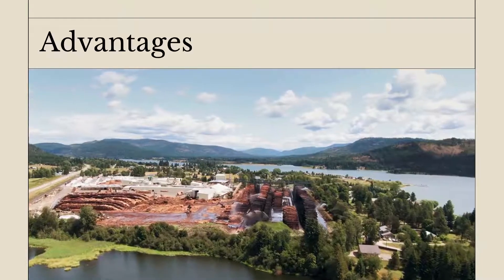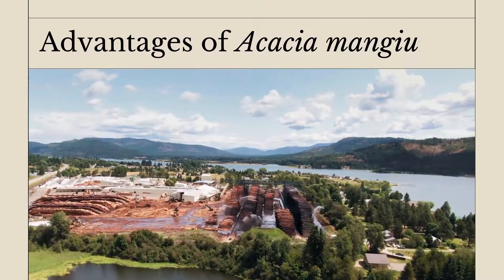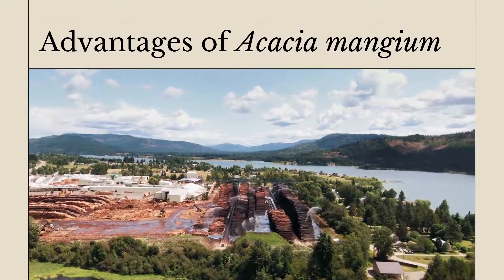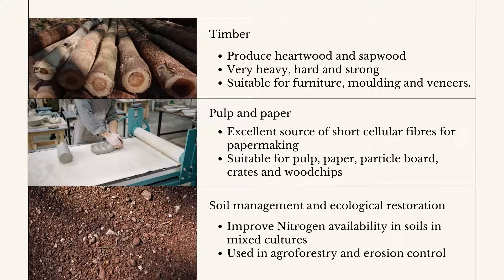Despite being an invasive species, let us look at the bright side of Acacia mangium. The trees produce sapwood and hardwood, making them potential timber sources. The timber is very heavy, hard, and strong, so it is not liable to warp or crack badly. It also has potential for moulding, furniture, and veneers. Acacia mangium is also used in the paper and pulp industry as an excellent source of short cellular fibres for papermaking. The wood is suitable for paper, pulp, particle board, crates, and wood chips.